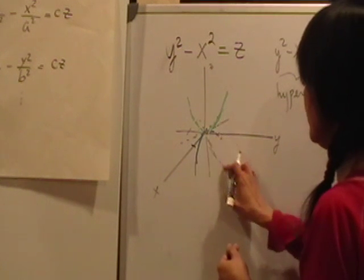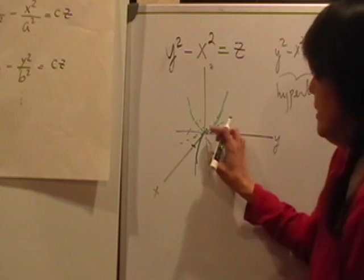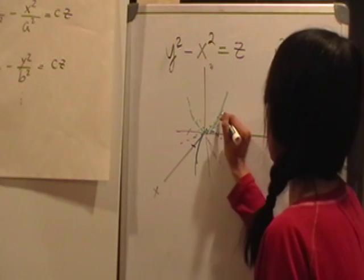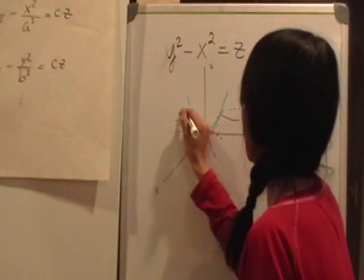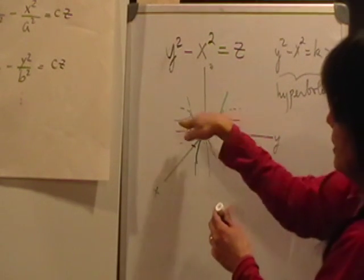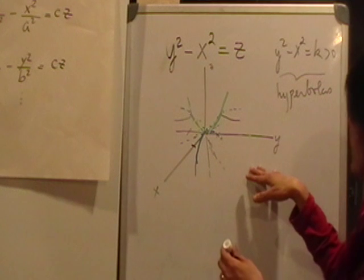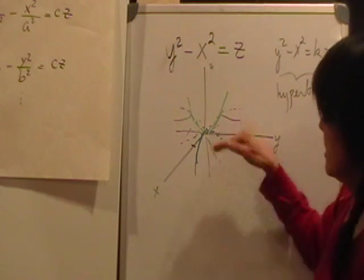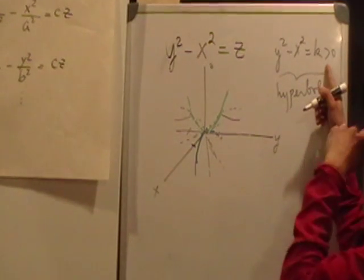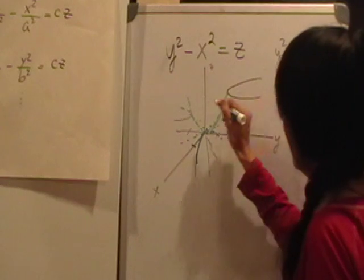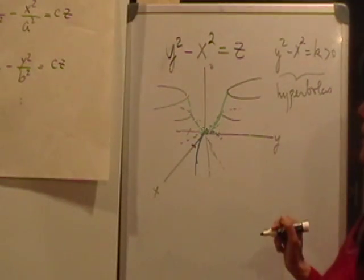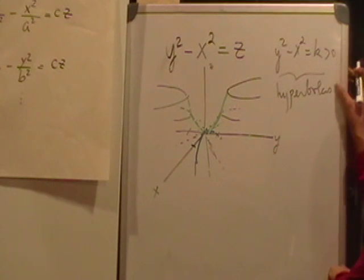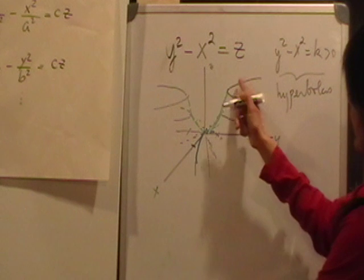The two lines were the degenerate form of the hyperbola. As we move up, we get hyperbolas that open sideways — parallel to the xy-plane with vertices on lines parallel to the y-axis. As k gets bigger, the hyperbolas get wider and wider. You can see the saddle forming, going sideways like that.